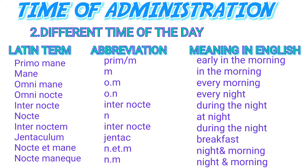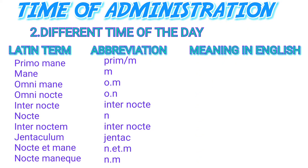'Inter nocte,' abbreviated the same way, means during the night. 'Nocte et mane,' abbreviated N et M or QNM, means night and morning — either abbreviation can be used. 'Jentaculum,' abbreviated 'jentac,' refers to breakfast.